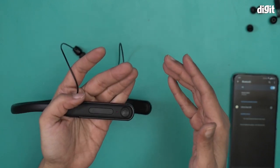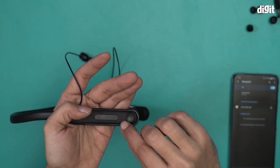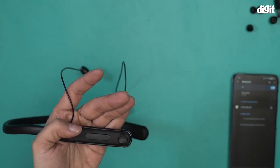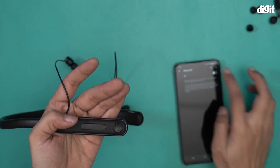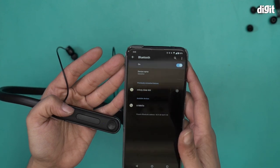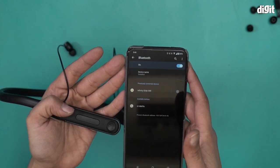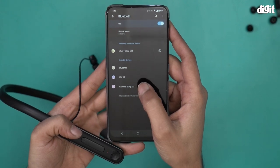It's vibrating right now which means it's turned on, and there's a red and blue LED light blinking over here, which means that this device has entered pairing mode. I will start searching for a new device and let's see if this works. I'm getting a Hammer Sting 2 option over here. I will click on that.